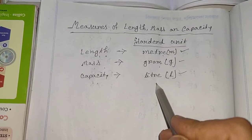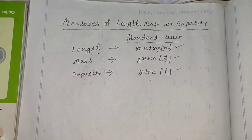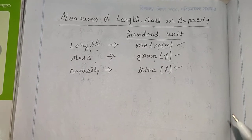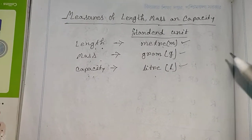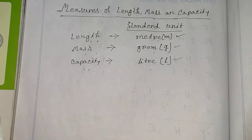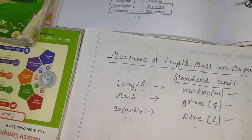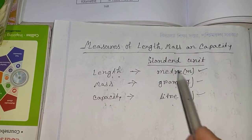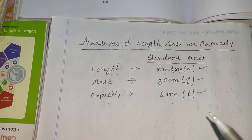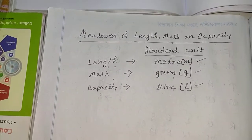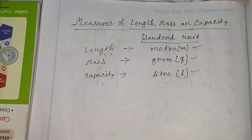The standard unit of length is meter, of mass is gram, and of capacity is liter. To measure a large thing we multiply the standard unit by ten, hundred, or thousand. To measure a smaller thing we divide the standard unit by ten, hundred, or thousand. We call these prefixes deca, hecto, kilo, and so on.